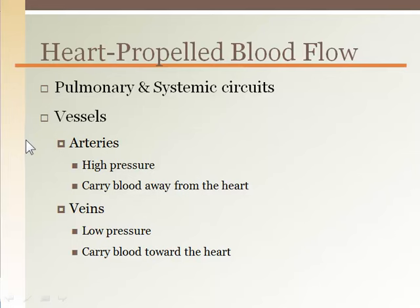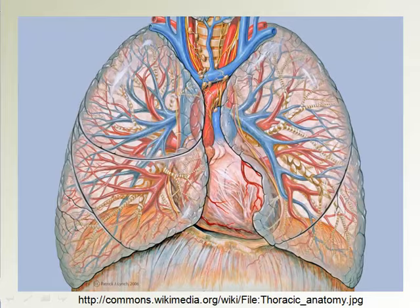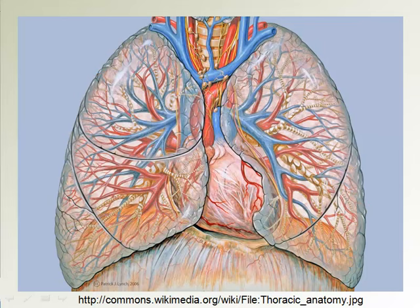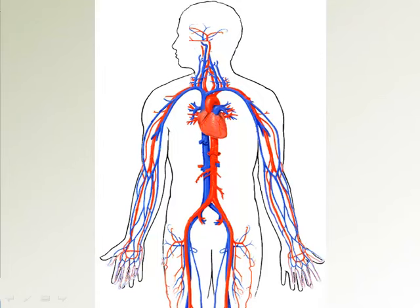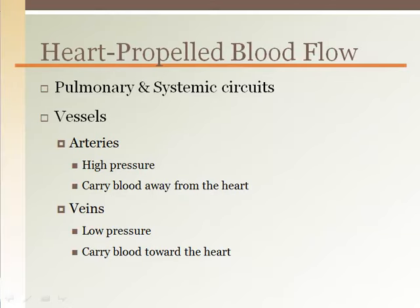The heart is a pump that propels blood through two different circulatory circuits at the same time. The first circuit is the pulmonary circulation, which is specific to the lungs — the heart pumps blood to the lungs to get the blood oxygenated. The second circuit is the systemic circulation, which serves the rest of the body from the brain to the toes and all the organs in between.